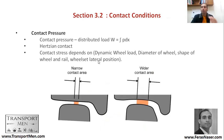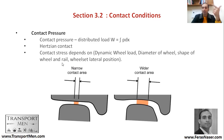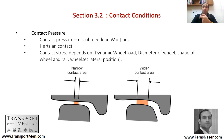The contact between wheel and rail involves a distributed pressure load over a small contact area. The contact stress depends on dynamic wheel load, diameter of the wheel, shape of the wheel, rail conicity, and wheel set lateral position. The contact patch can be narrow or wide but is generally very small — about the size of a coin — and is responsible for transferring the entire dynamic load from the train to the rails.